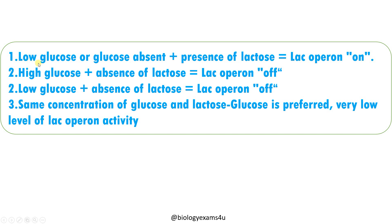Summary: First, low or absent glucose with lactose present — lac operon is on, and lactose is used as an alternative nutrient. Second, high glucose with lactose absent — lac operon is off; this is the normal condition as glucose is the preferred carbon source. Third, low glucose and lactose absent — lac operon is also off, since without lactose there is no allolactose to inactivate the repressor. Fourth, equal concentrations of glucose and lactose — glucose is still preferred, so there will be only very low level of lac operon activity.